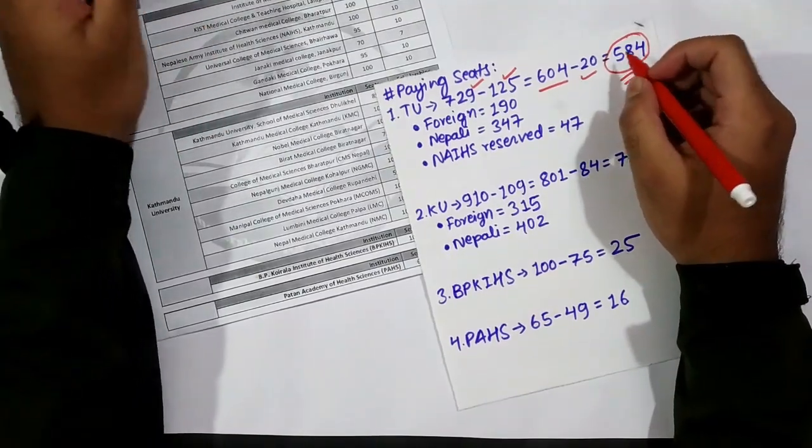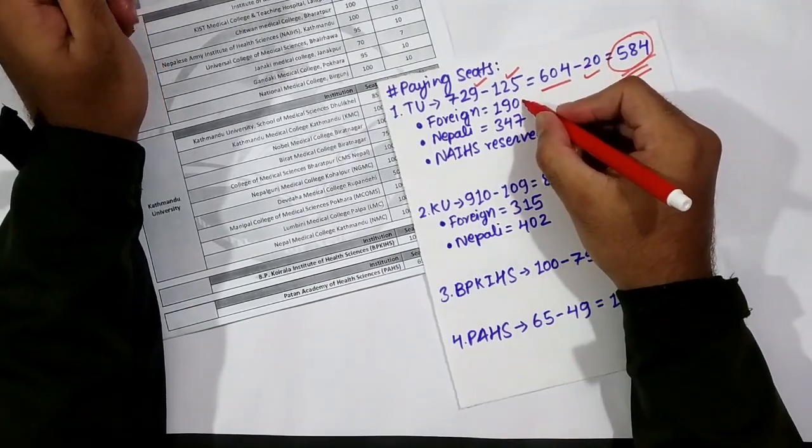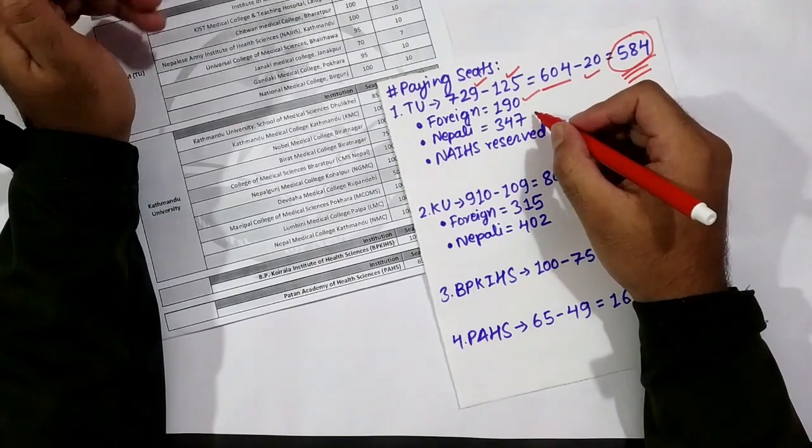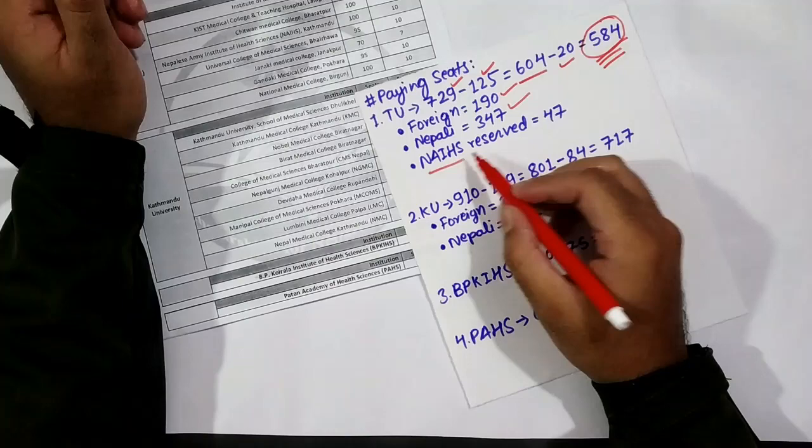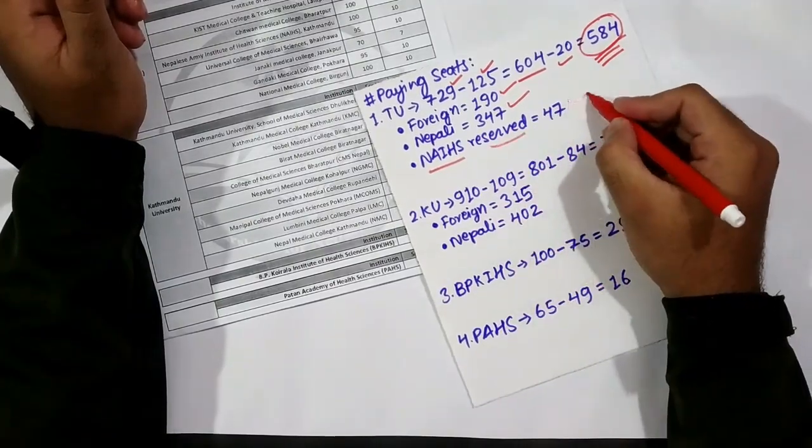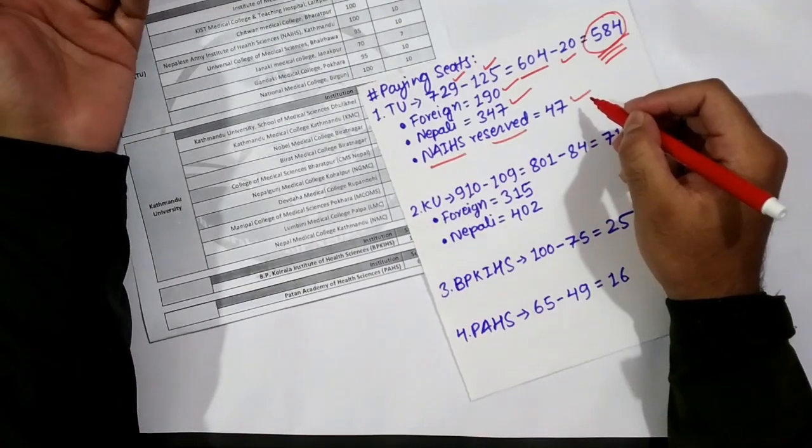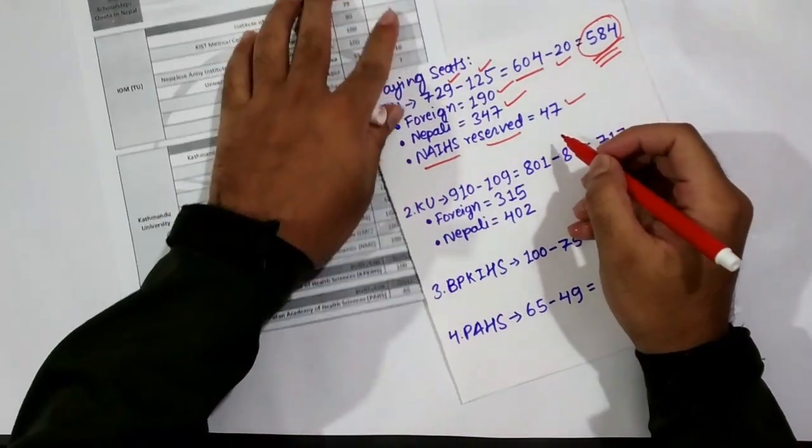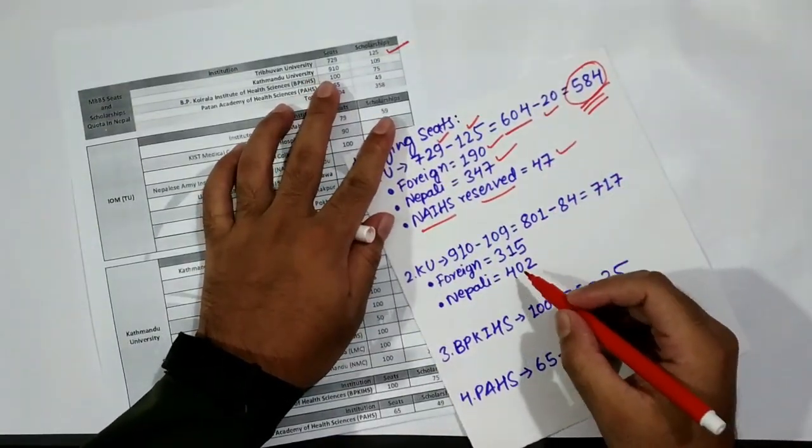That is under the remaining 7 medical colleges. Out of that 584, the foreign seats will be 190, the Nepalese reserve seats will be 347, and Nepal Army reserve seats will be 47. These seats will be allocated to army staff and army personnel. Moving forward to KU, we have altogether 910 seats.